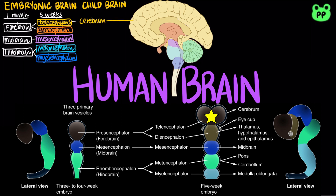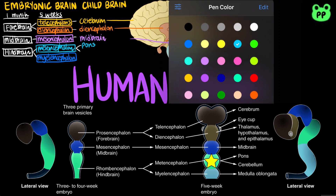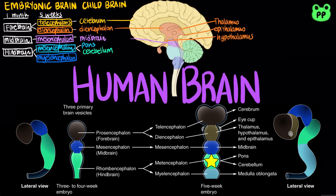During early childhood, telencephalon develops into cerebrum, diencephalon develops into the thalamus, hypothalamus, and epithalamus, mesencephalon develops into the midbrain, metencephalon develops into pons and cerebellum, and myelencephalon develops into medulla oblongata.